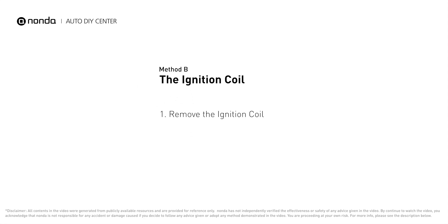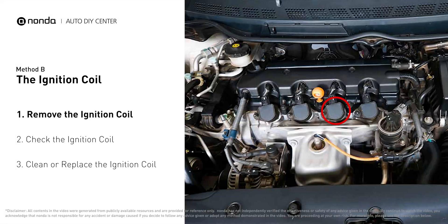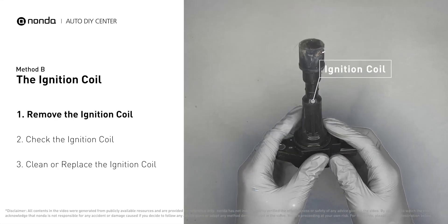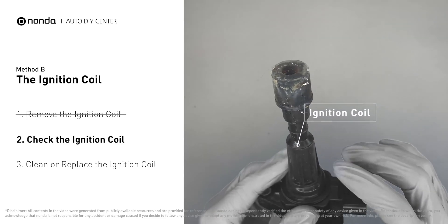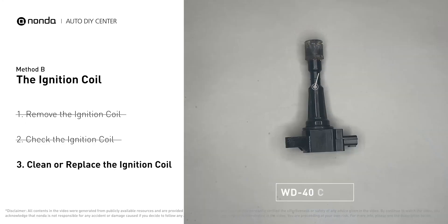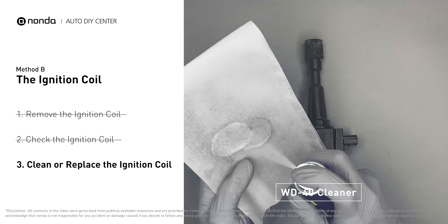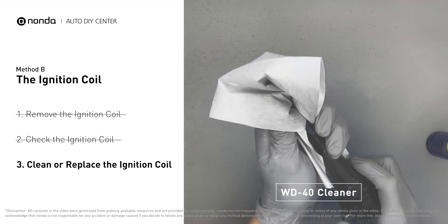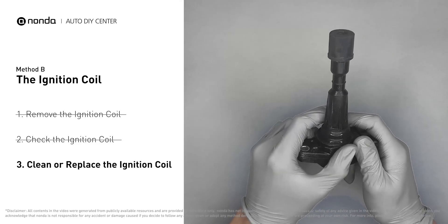Method B: the ignition coil. Ignition coils are usually installed directly at the cylinder head above the spark plug. First, carefully remove the ignition coil from the engine. Check to see if the ignition coil is either stained or damaged. If it is covered with engine oil or stains, simply clean it with a WD-40 cleaner. Otherwise, replace the damaged ignition coil with a new one.